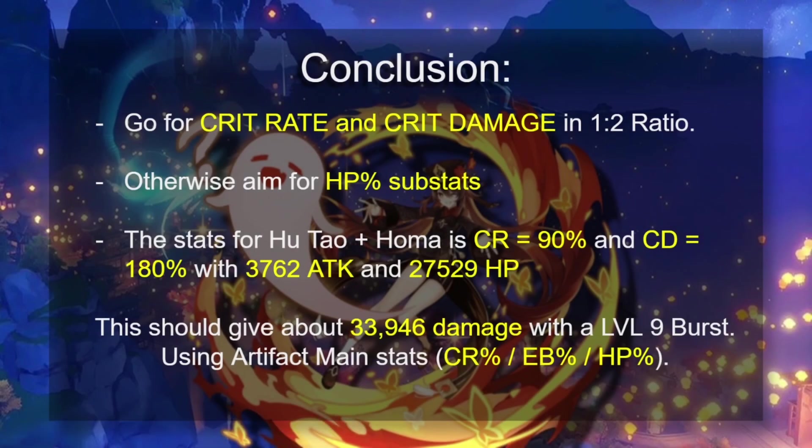In conclusion, you want to go for crit rate and crit damage in a 1 to 2 ratio. Literally, that's all you want to pray and hope for that you get. You just want crit rate and you want crit damage. Otherwise, the next thing you want is HP percent substats. If you get an HP percent substat, don't cry about it. It's going to be pretty good. It's going to be the next best thing. After HP percent substats, it's probably going to be attack percent substats. And then, flat ones after that. But the flat ones, as we can see at high levels, are not ideal.